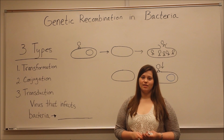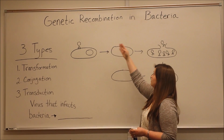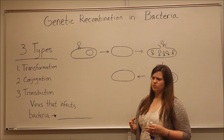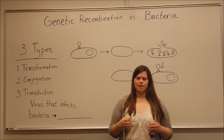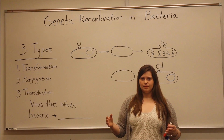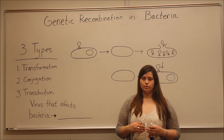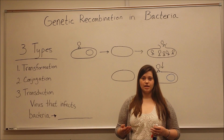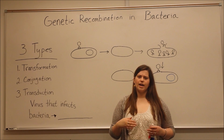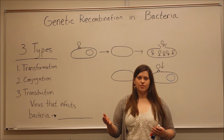Hi everyone, and welcome to Biology Professor. Today, we're talking about different mechanisms of genetic recombination in bacteria. Bacteria cells are able to obtain foreign DNA through a few different mechanisms, and then integrate that foreign DNA into their own chromosomes in a process of genetic recombination. The reason this is interesting is because bacteria cells can acquire new functions or new abilities by picking up this extra DNA.